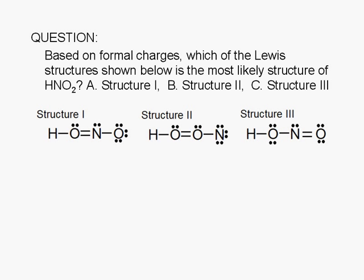Based on formal charges, which of the Lewis structures shown below is the most likely structure of HNO2? A. Structure 1, B. Structure 2, or C. Structure 3.